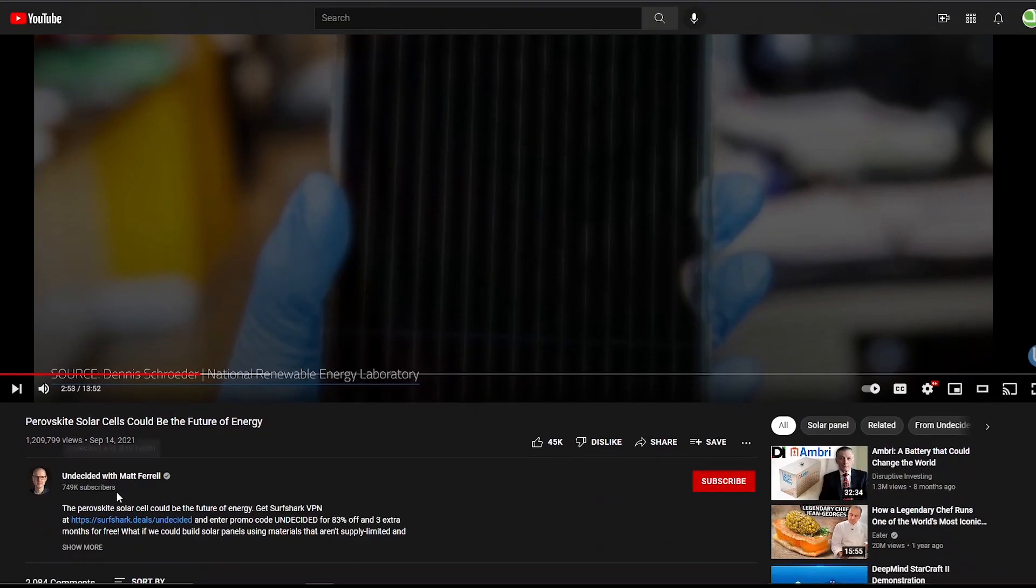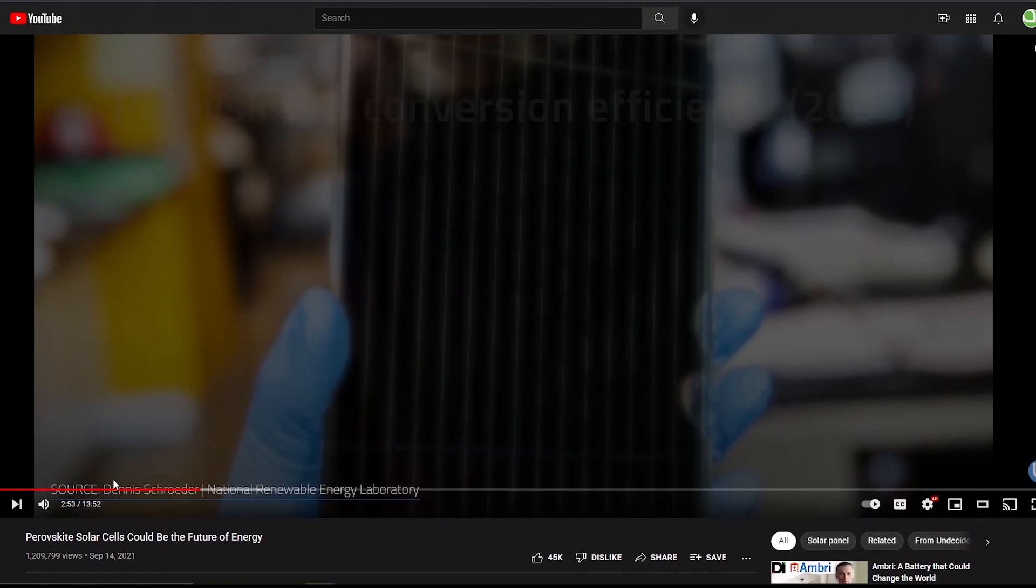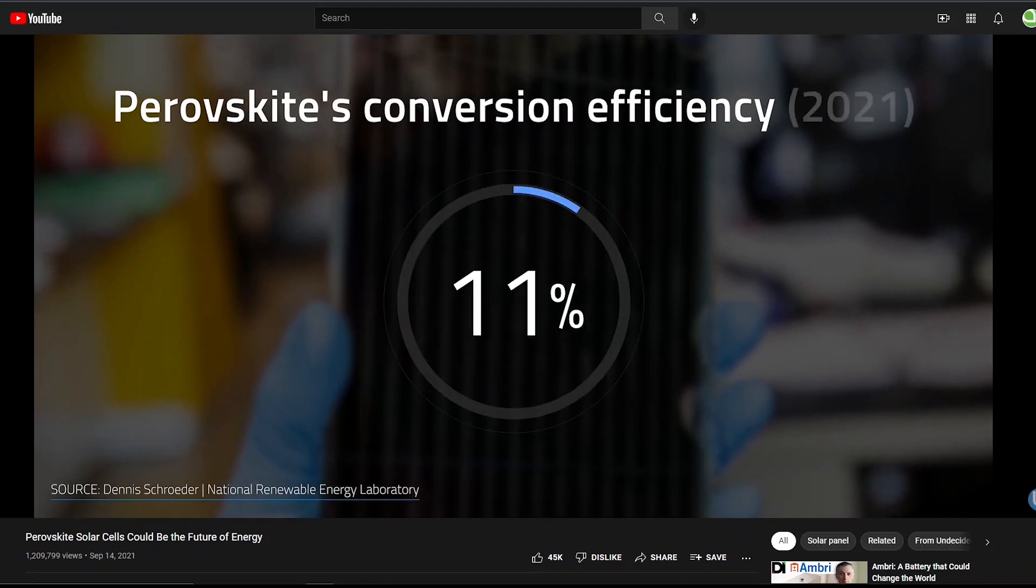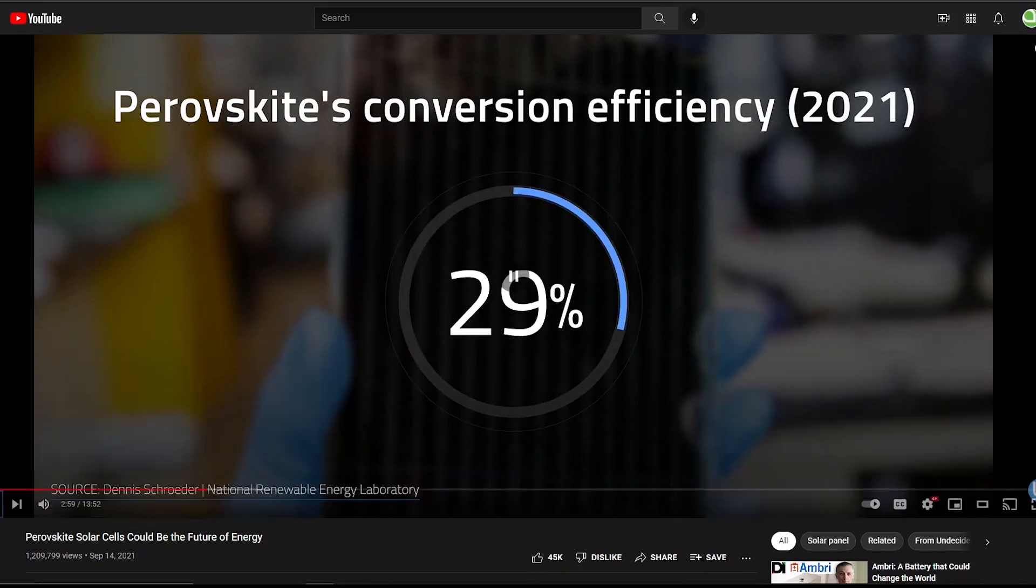So here's one from Undecided with Matt Farrell which I think is a great channel, I enjoy his videos. He reports about 3 percent in 2006 to over 29 percent today. Okay, so that makes it seem like in less than a decade or so it's gone from 3 percent to 29 percent. So oh my goodness in another decade it's going to be like 60 percent. That's just not probably possible.